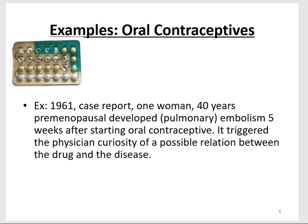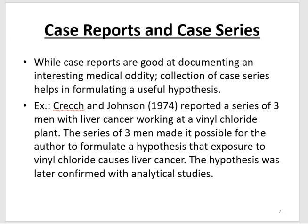Another example is from oral contraceptives in 1961 — a case report of a 40-year-old premenopausal woman who developed pulmonary embolism five weeks after starting oral contraceptives. This raised a question about a possible association. A case series is a series of case reports. For example, in 1974, a report of three men with liver cancer working in a vinyl chloride plant. It's no longer one person; it's a collection, and the evidence begins pointing toward a possible association.